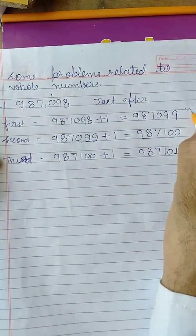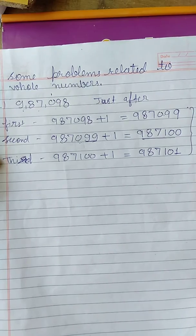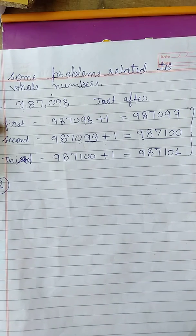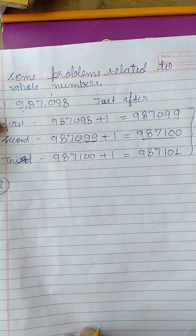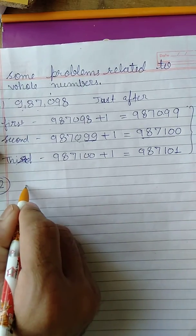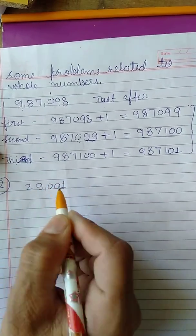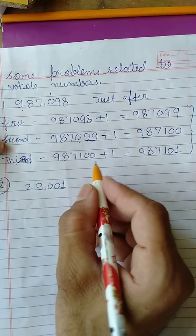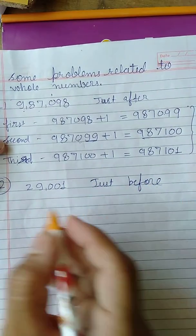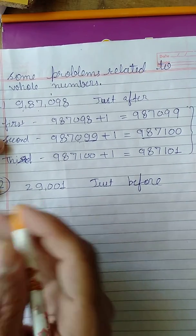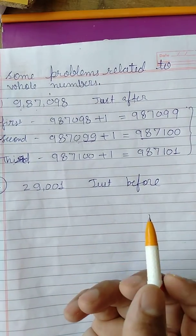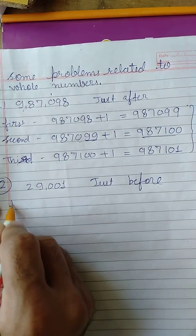Similarly, question number two says: write three whole numbers occurring just before. Just before means predecessor. Predecessor means minus one, as we discussed in the last video. The given number is 29001 — twenty-nine thousand one. Predecessor means just before the number, so we subtract one.